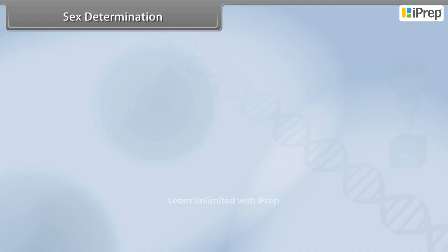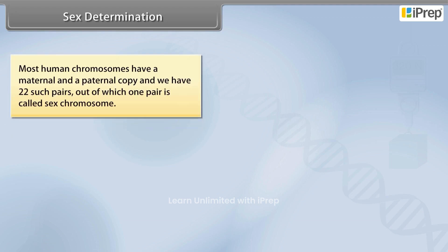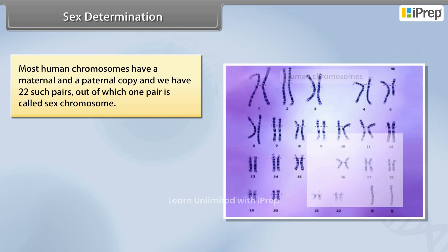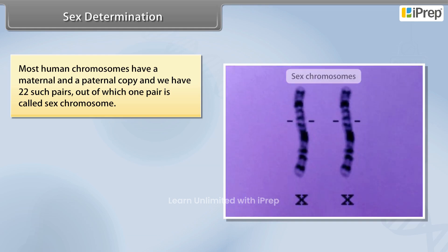Sex Determination. Most human chromosomes have a maternal and a paternal copy, and we have 22 such pairs, out of which one pair is called sex chromosome.